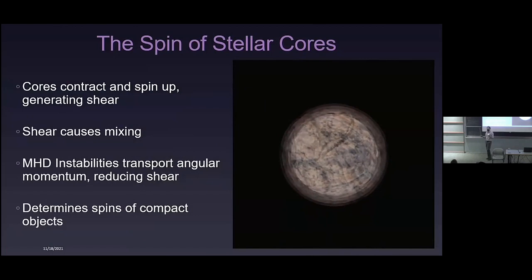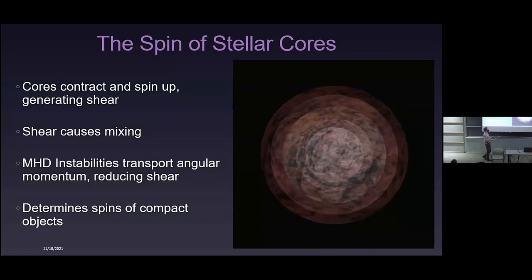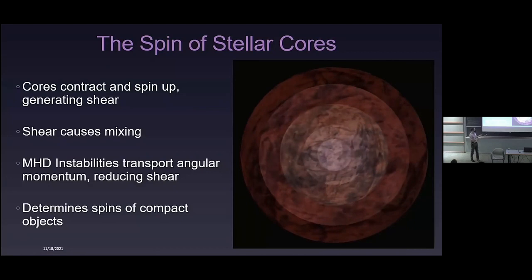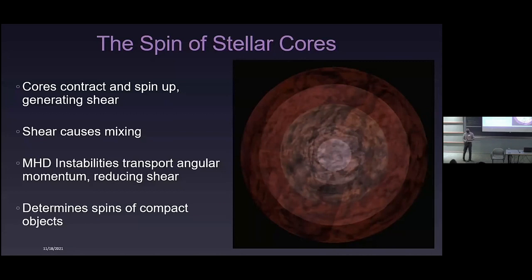The basic problem has been known for a long time: as stars evolve, they tend to change their structure. Typically the cores of stars contract as they evolve, and the envelopes often expand. So if you conserve angular momentum in each part of the star, you tend to wind up with a very rapidly rotating core and a very slowly rotating envelope. That means you have a lot of shear in the star.